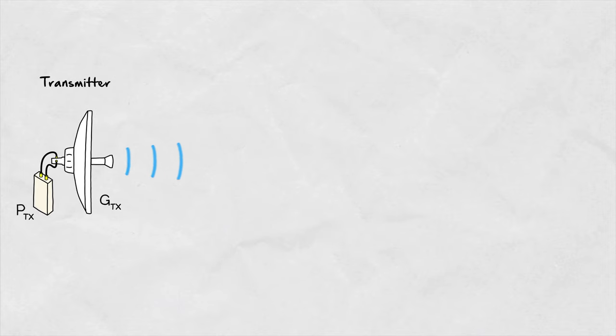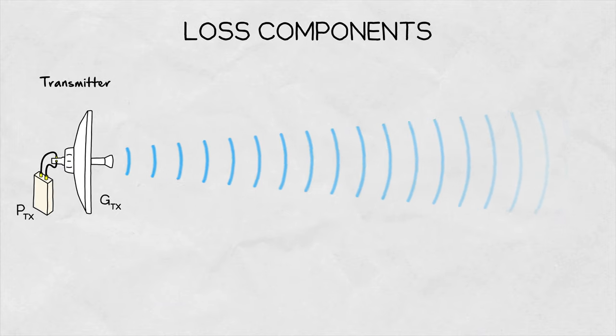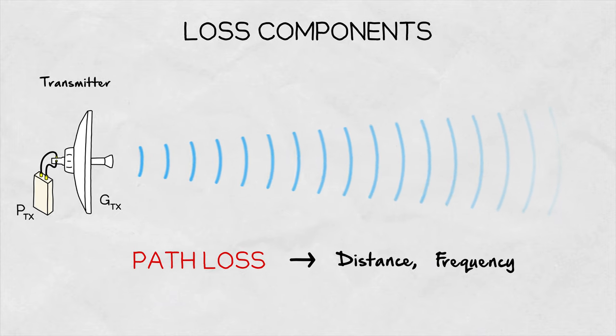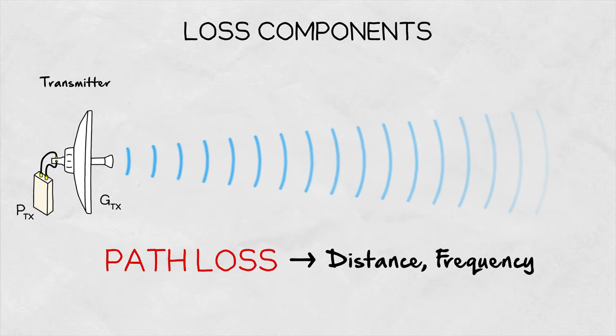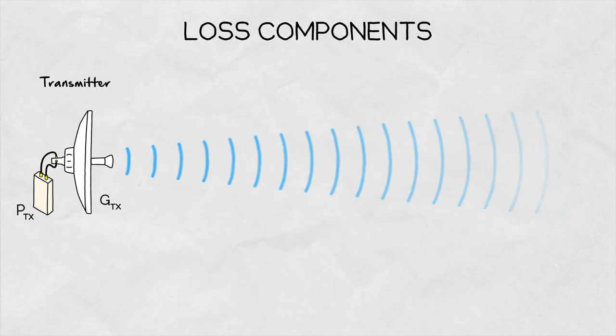The antenna radiates signal into space. As the wave travels through space, it loses strength. This loss of power is called path loss, and it grows with distance and frequency. If you want to know more about path loss, click the link in the corner or in the video description.